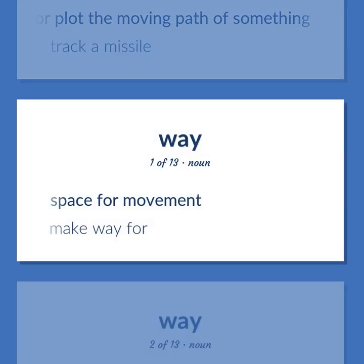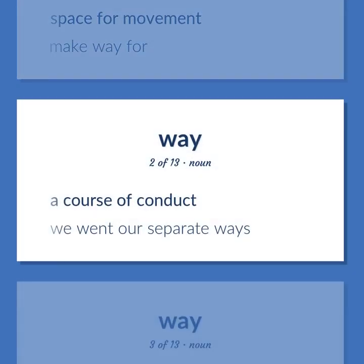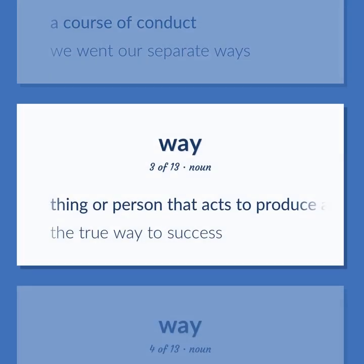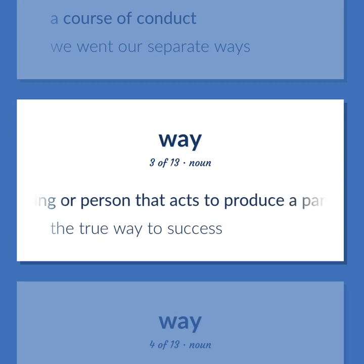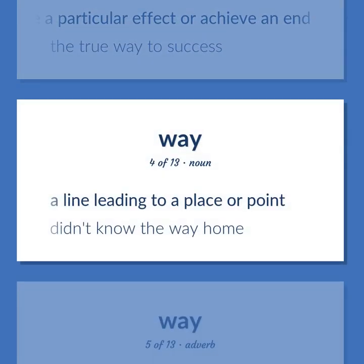Space for movement; make way for. A course of conduct. We went our separate ways. Thing or person that acts to produce a particular effect or achieve an end. The true way to success. A line leading to a place or point. Didn't know the way home.